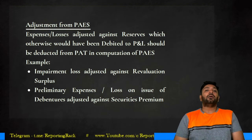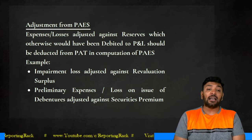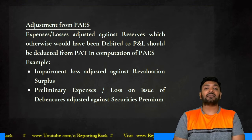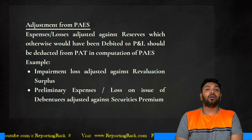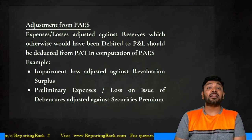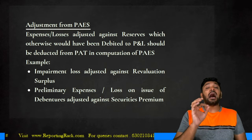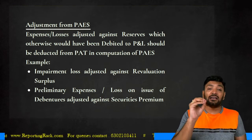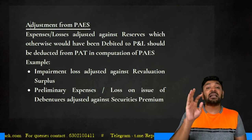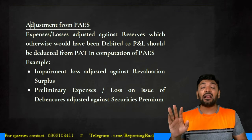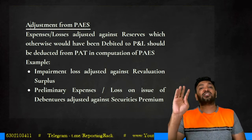Expenses or losses adjusted against a reserve which otherwise would have been debited to P&L should be deducted from profit after tax in determination of PAS. For example, impairment loss as per IND AS 36 — if adjusted against revaluation surplus instead of P&L, such amount should be reduced in computation of PAT. Similarly, preliminary expenses or loss on issue of debentures adjusted against securities premium should be reduced from profit after tax.